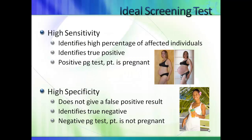An ideal screening test will have high sensitivity, which means that it will be able to identify a high percentage of affected individuals. It is also considered to be a true positive test, meaning that people who test positive with the screening test really do have the condition. An example is a positive pregnancy test when a pregnant woman has a positive test result.